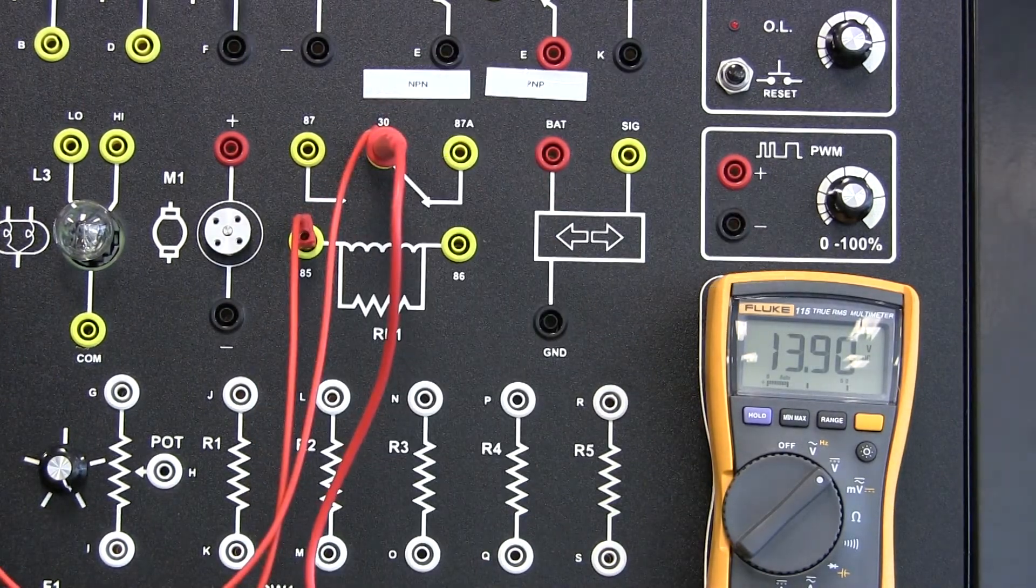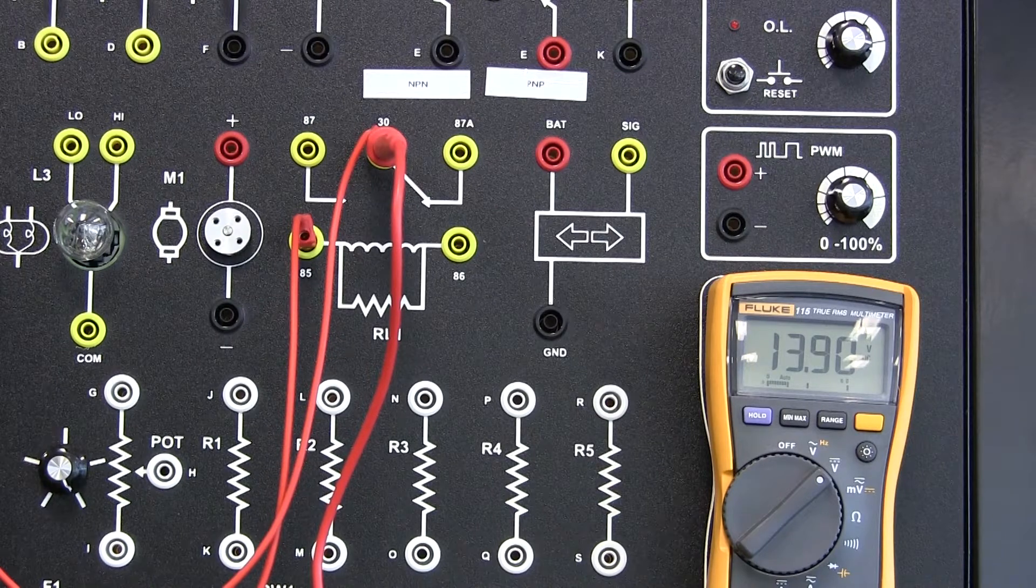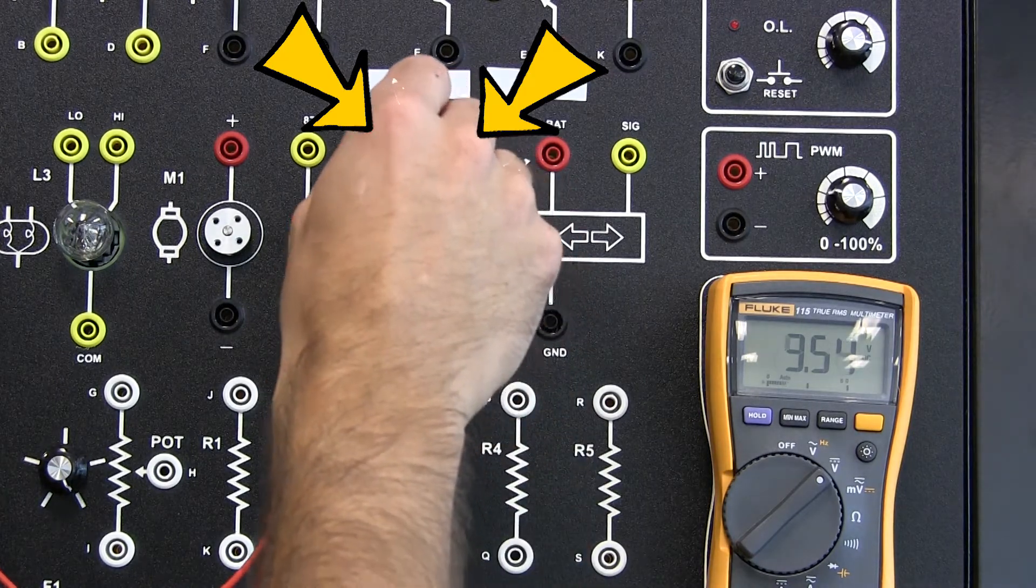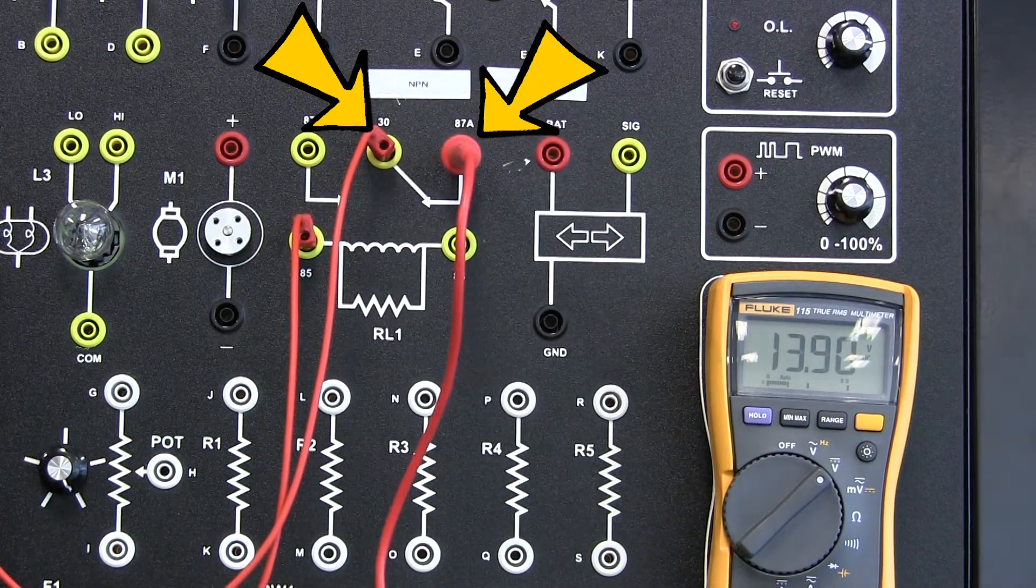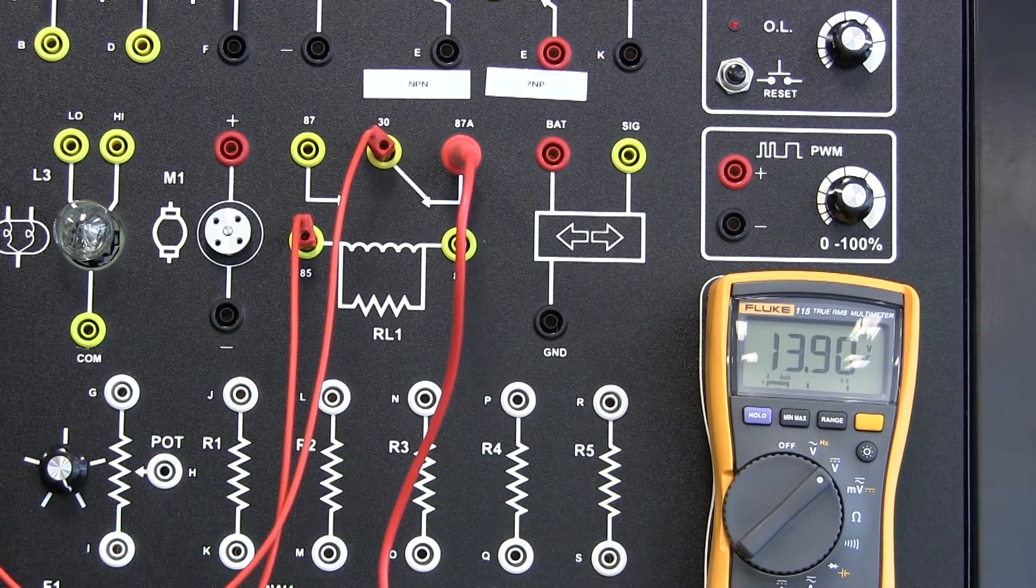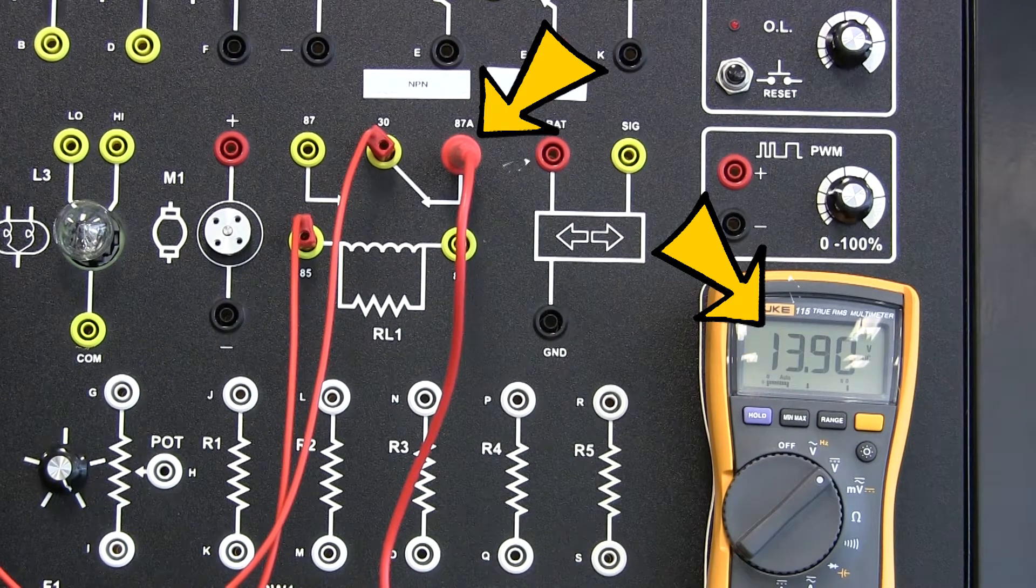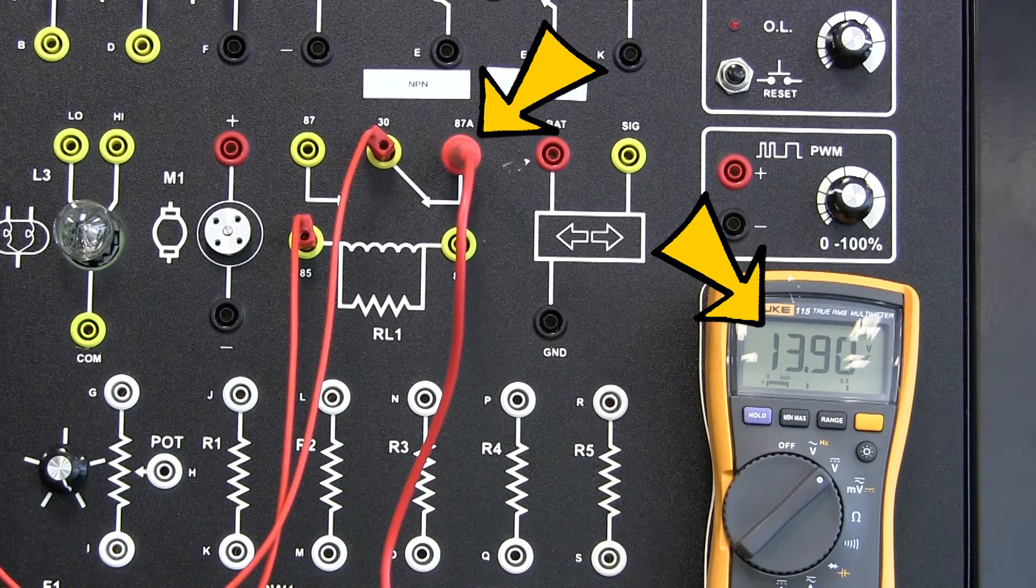In the case of a 5-pin relay, terminal 30 to 87A is normally closed. Which means at rest, you should have voltage also at terminal 87A as long as you've got it at terminal 30.